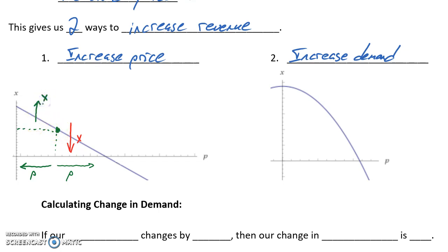So price and demand have this inverse relationship, and it doesn't necessarily have to be linear. With the graph on the right, we have a non-linear relationship between price and demand, but we see that same inverse relationship. As we increase our price point, our demand decreases.